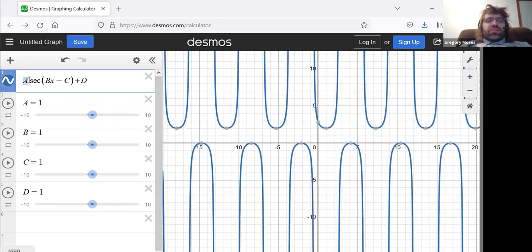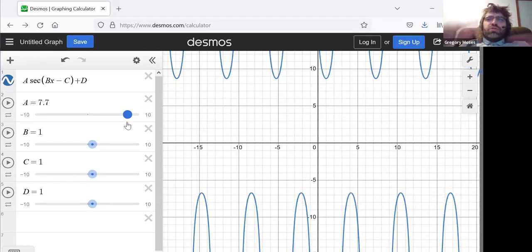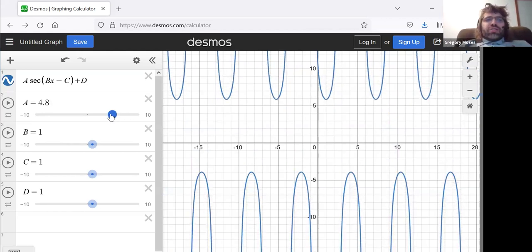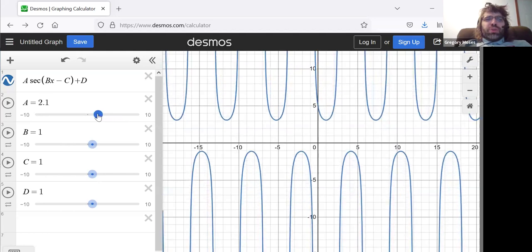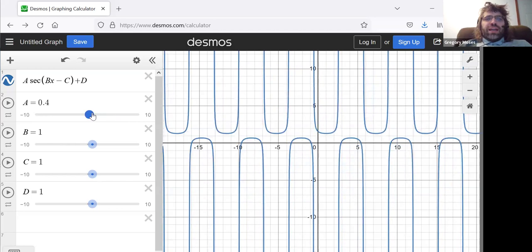This number in front of the secant has stretched the sine, stretched the cosine, stretched the tangent, stretched the cotangent. Well, what do you know? It also stretches the secant vertically. If we bring this close to zero, it pushes the secant in towards the axis.